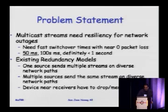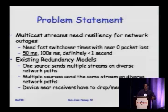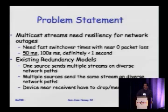There are existing redundancy models where one source sends a video data stream on multiple streams over diverse network paths — from separate source addresses, separate group addresses, or multiple sources sending the same stream on different network paths. Devices near the receivers drop the redundant frames and only forward what they need to. If they detect a failure, they can accept the other data stream. These are called source redundancy models.